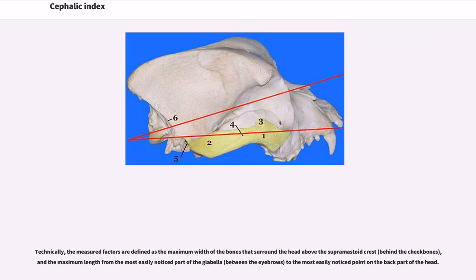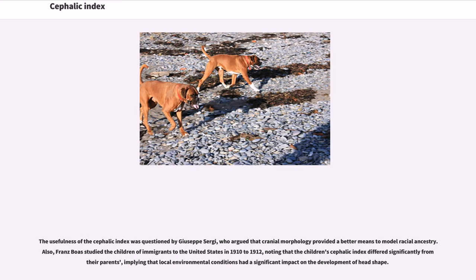Technically, the measured factors are defined as the maximum width of the bones that surround the head above the supramastoid crest, behind the cheekbones, and the maximum length from the most easily noticed part of the glabella, between the eyebrows, to the most easily noticed point on the back part of the head.